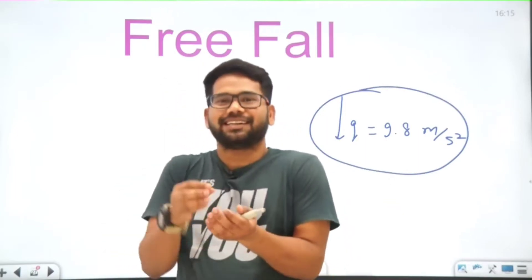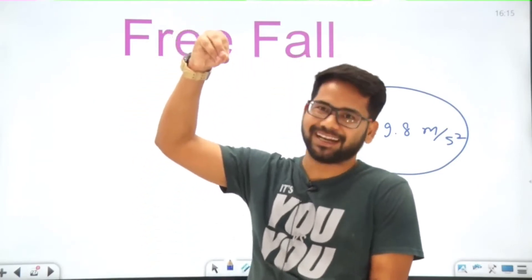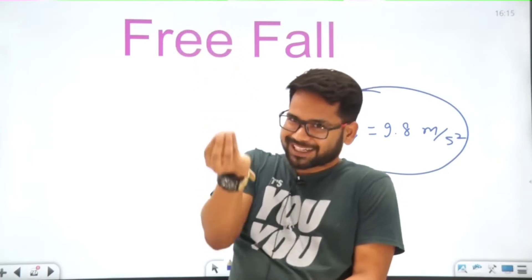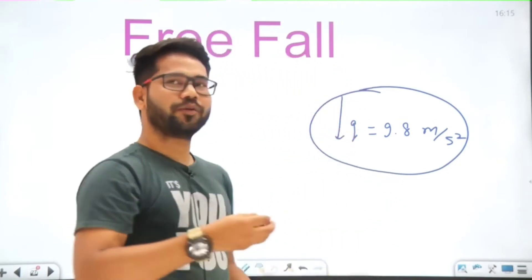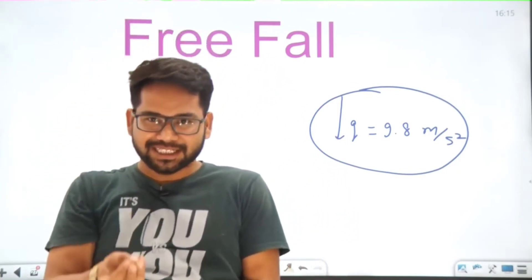After reaching some height, gravity pulls it down. When it's going up, acceleration acts downward and it's retarding. When it's coming down, it's accelerating.